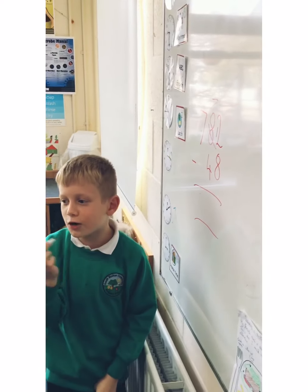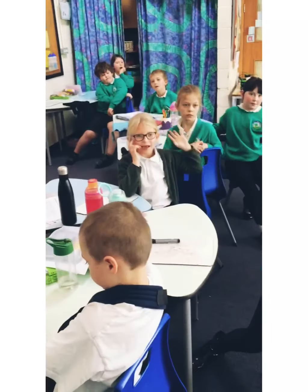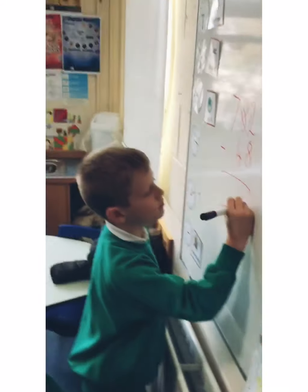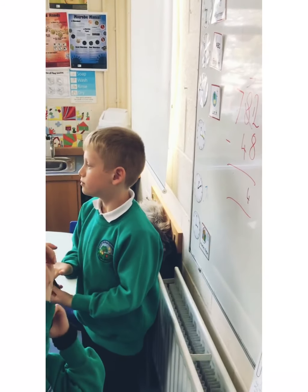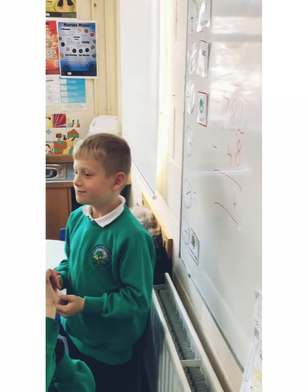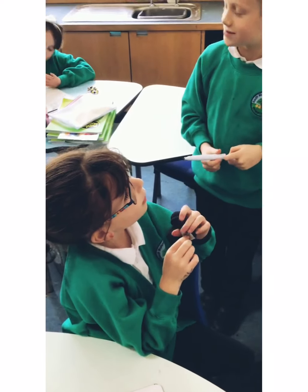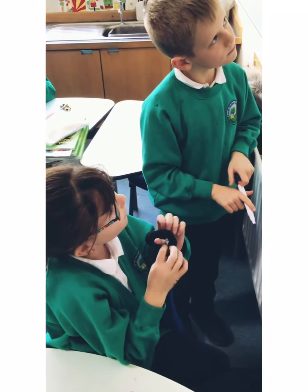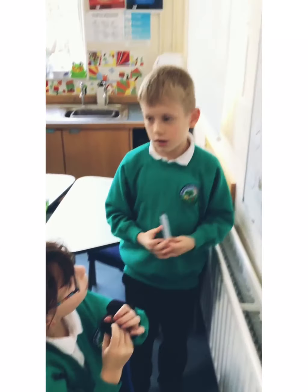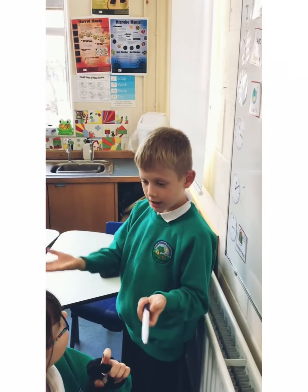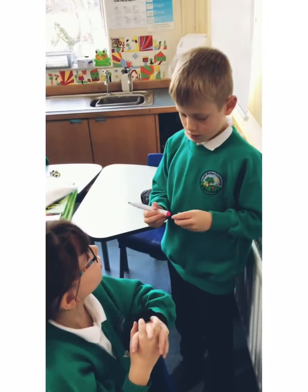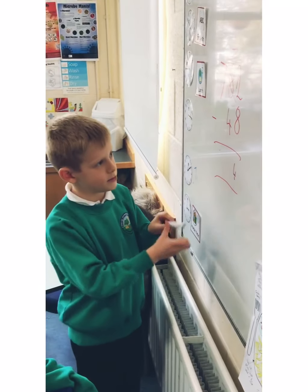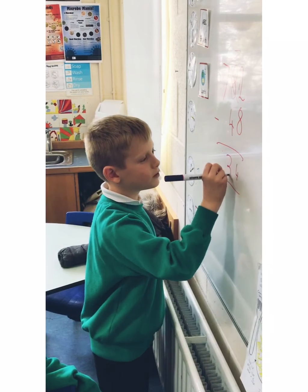So what do we put in the 1's column again? A 4. Okay, 4. Now what do we do next, class? Joseph? You take away 4 from 7. Take away 4 from 7 — what is that? 3. So, 3.